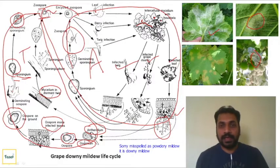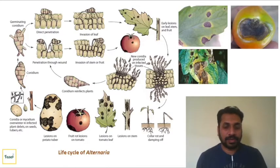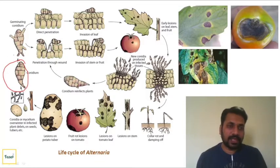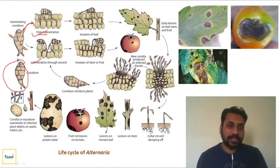Now we can see an example of a pathogen having only an asexual stage. The example here is Alternaria leaf blight of tomato - it also occurs on potato and is called early blight. The conidium will overwinter or oversummer, and when suitable weather conditions arrive, the conidia will germinate. You can see the germ tube starting here. Once it starts to germinate, it comes in contact with the host.